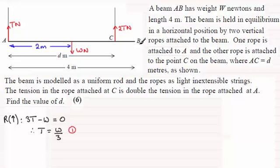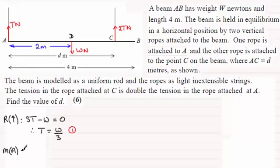Now we've got to take moments. You can take moments about any point you like — A, D, C, or B. I'll show you the equations you get when you take it about various points. Let's take moments about A. The moment of a force is the force times the distance from the point you're taking moments about. We need to take a positive sense — I'm going to take anti-clockwise as positive in this one.